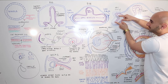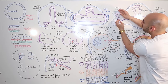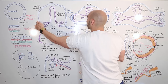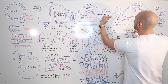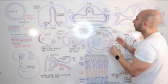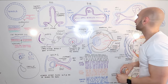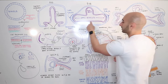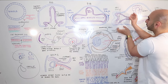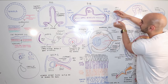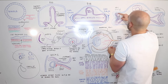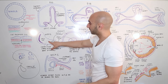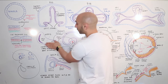The optic vesicle, which was initially a single wall, folds and forms two walls. At the same time, the lens placode — which is surface ectoderm — differentiates, thickens, and digs into the optic vesicle. The optic vesicle forms the optic cup by folding on itself into a two-walled structure. The lens placode pinches in and will eventually form the lens.